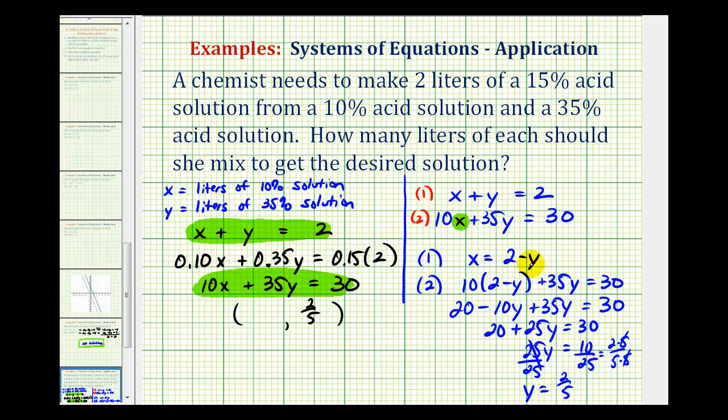We know from before that x equals 2 minus y. So we'd have 2 minus 2/5, which is 1 and 3/5. So we have 1 and 3/5 liters of the 10% solution.